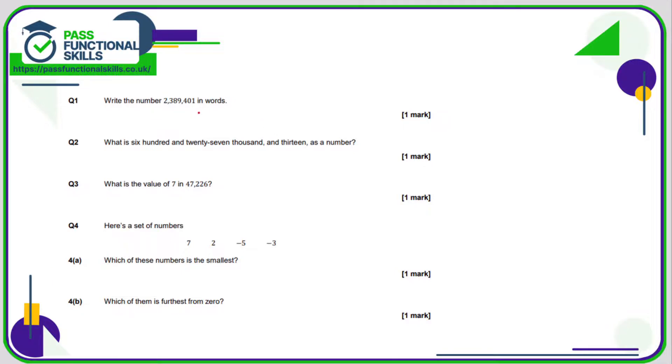Question number one, we need to write this number in words. These commas are really useful. If you've got a really long number, remember that going from right to left after every three, you can stick in a comma and these commas replace words. This first comma replaces the word thousand and the second comma replaces the word million. So this number is simply 2,389,401.